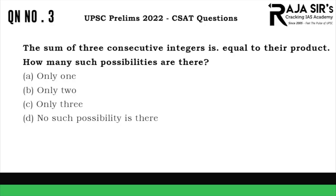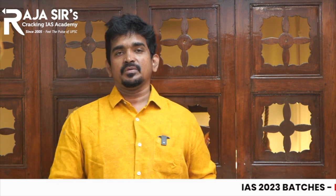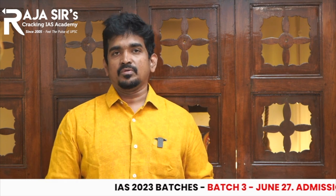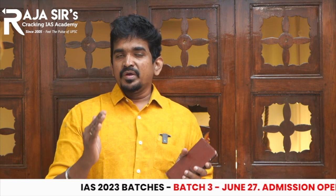The sum of 3 consecutive integers is equal to their product. How many such possibilities are there? Options: A - Only 1, B - Only 2, C - Only 3, D - No such possibility. It is very simple. 3 consecutive integers - basically suppose x, x plus 1, x plus 2.